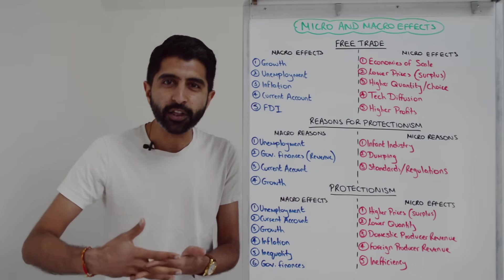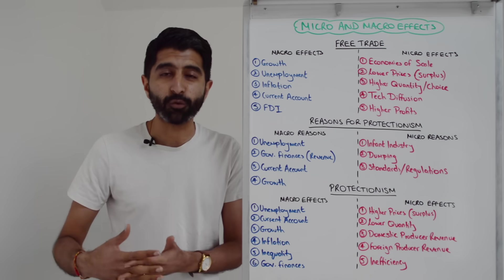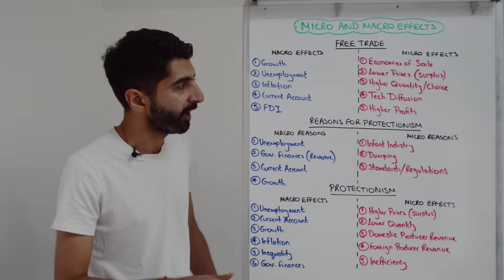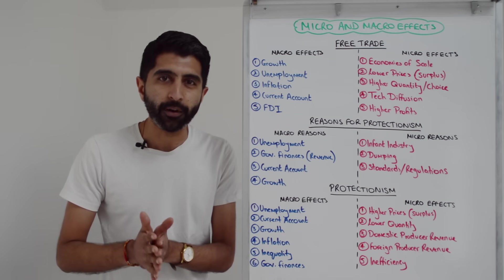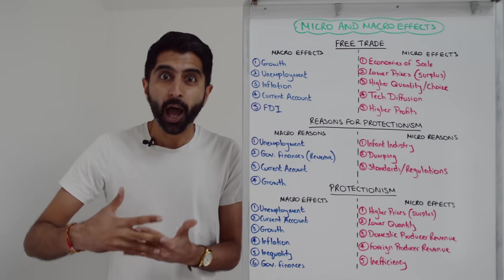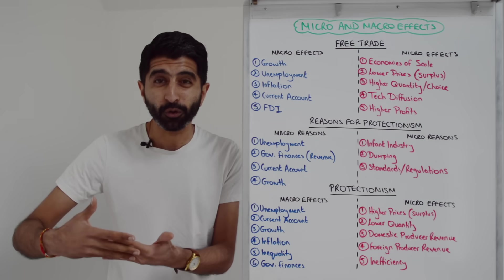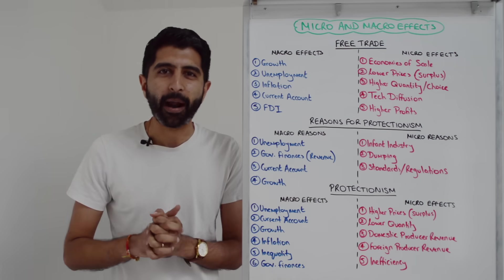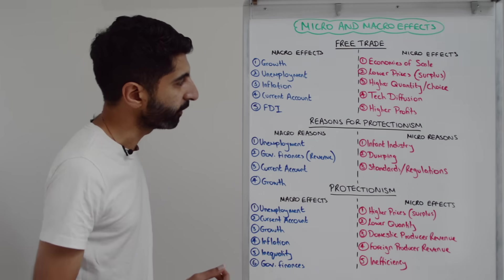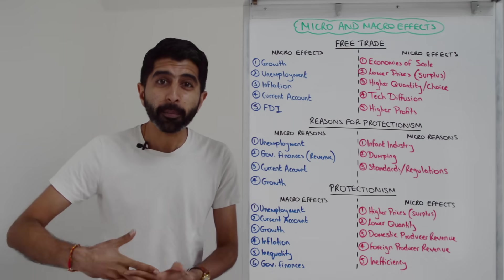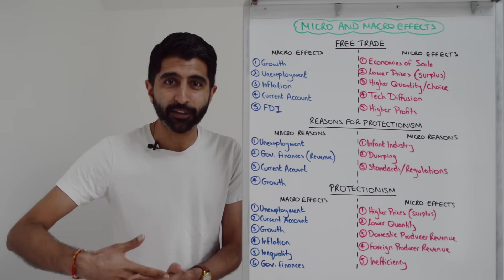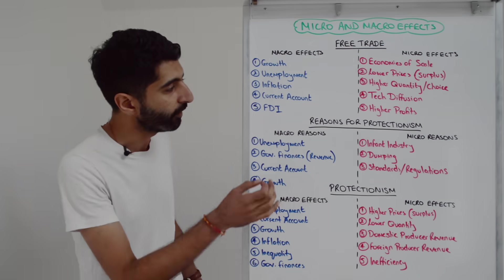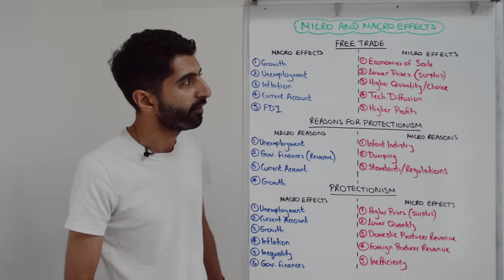For inflation, with free trade firms can access their raw materials at lower prices, reducing their costs, maybe meaning lower cost-push inflation. You've got the link to the current account as well. Countries with large comparative advantages may be able to exploit those well, leading to current account surpluses, whereas those with limited comparative advantages may have current account deficits as a result of free trade. But also we could talk about inward FDI — if trade is negotiated and free trade deals are signed, often inward FDI is part of that free trade deal. So that is a macro benefit, a macro effect as well.